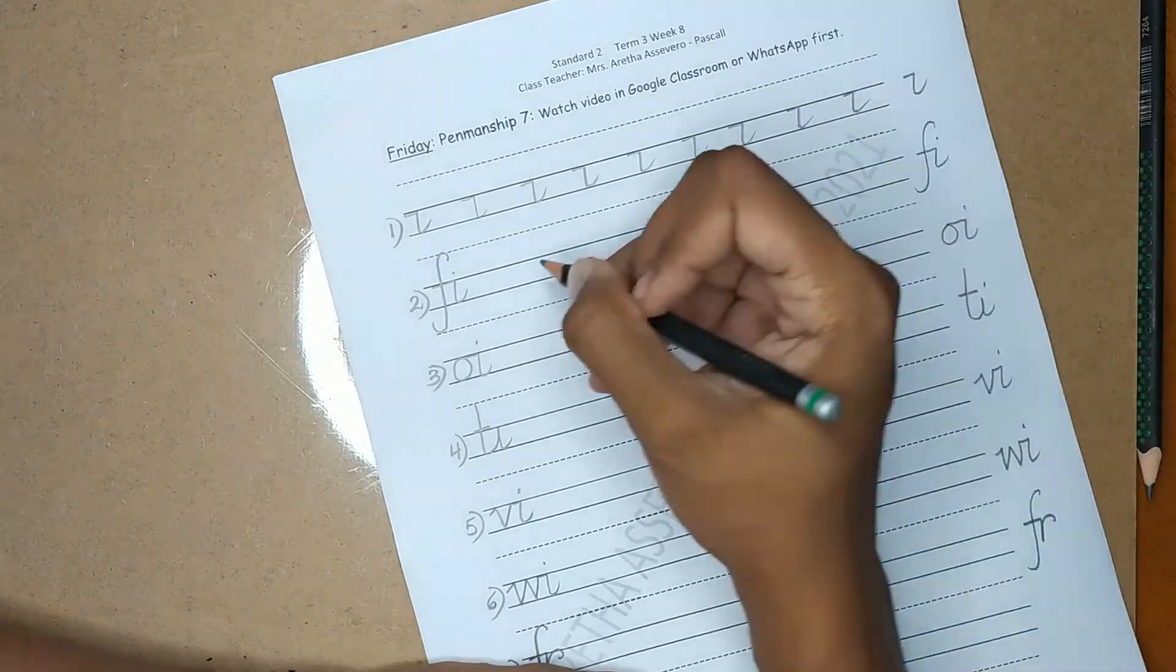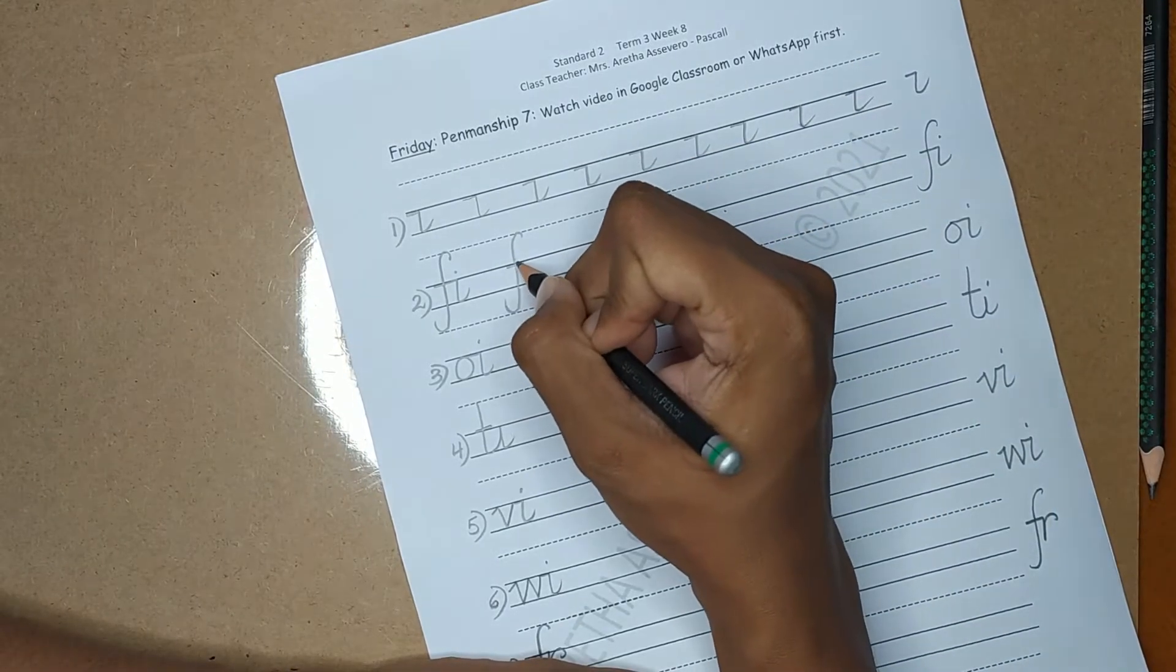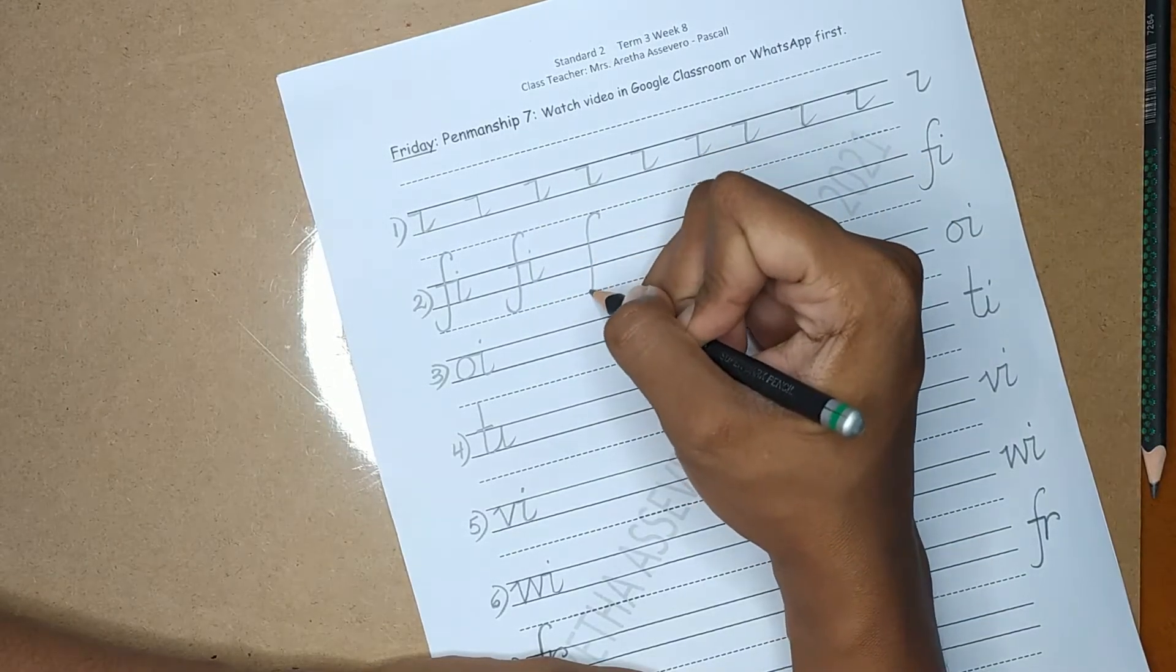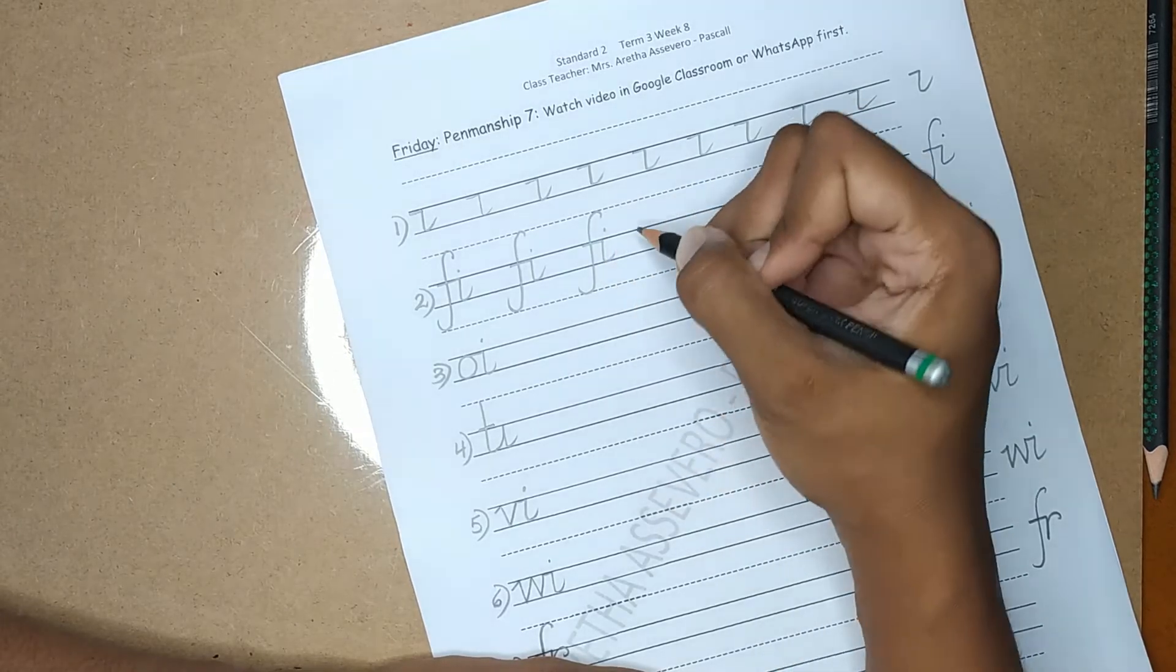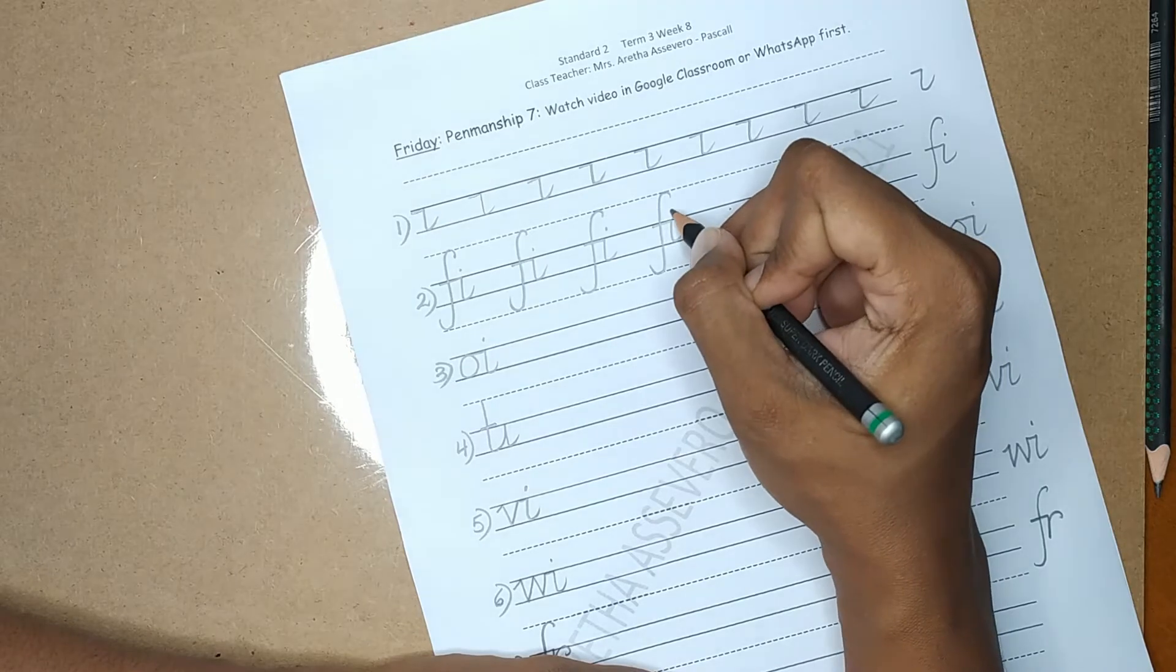The most important and frequent link that we looked at so far is the diagonal join. Today we will be looking at the horizontal link. This is what will be used for the following combination of letters.